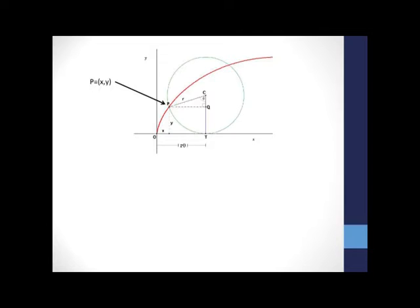So let's consider a circle of radius r rolling along the x axis. We can follow the path of a point P starting at the origin. And we'll use theta, the angle of rotation of our circle, as our parameter.